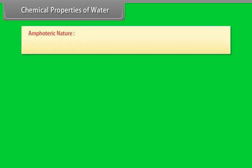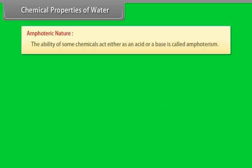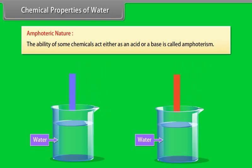Chemical properties of water: Amphoteric nature. The ability of some chemicals to act either as an acid or a base is called amphotericism.